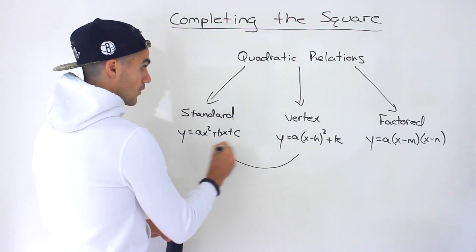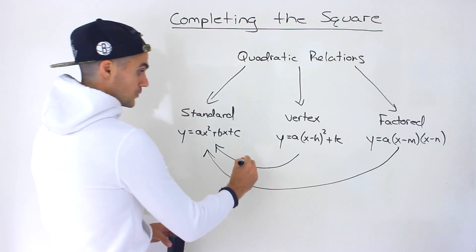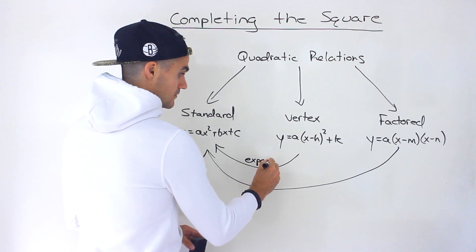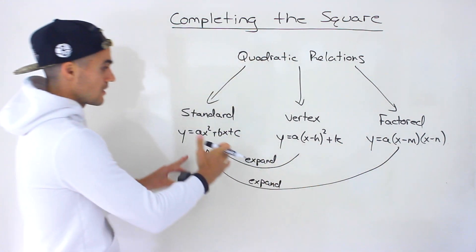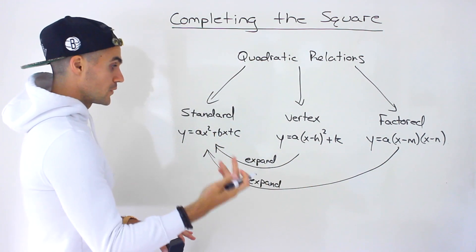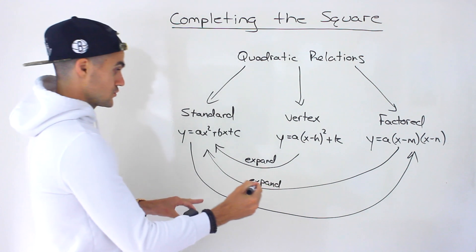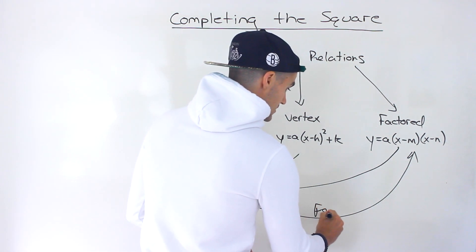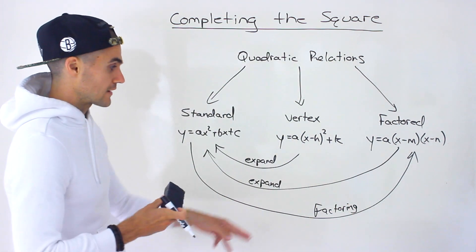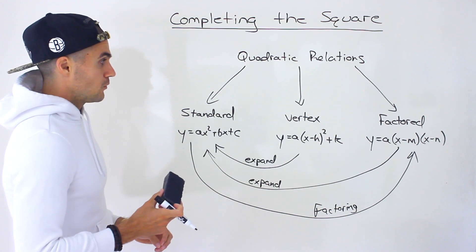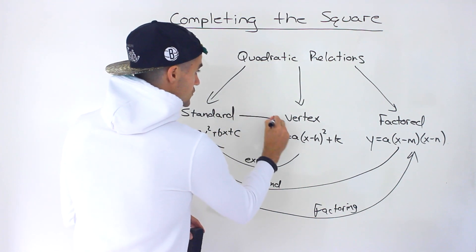To go from vertex form to standard form, or to go from factored form to standard form, we just expand — we multiply all of it out and we get to standard form. We also went through going from standard form to factored form, and that was with the process of factoring: different kinds of processes like taking out a greatest common factor or doing decomposition. What is pretty much left to do now is to go from standard form to vertex form.